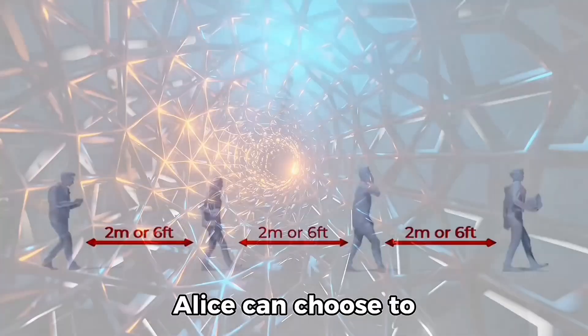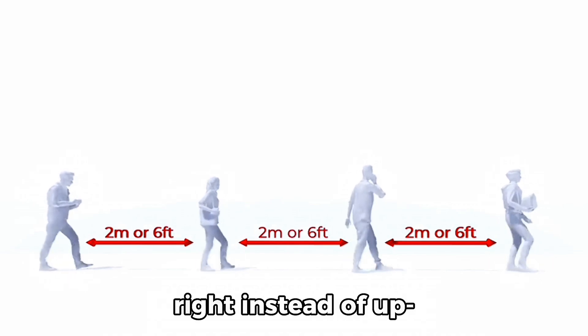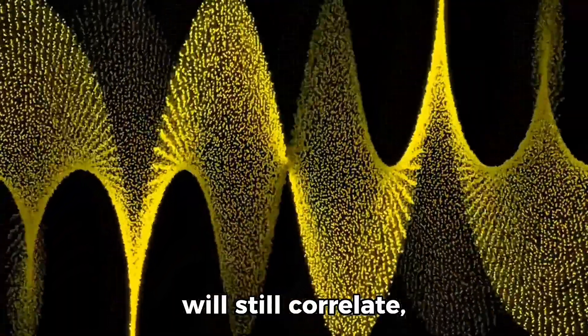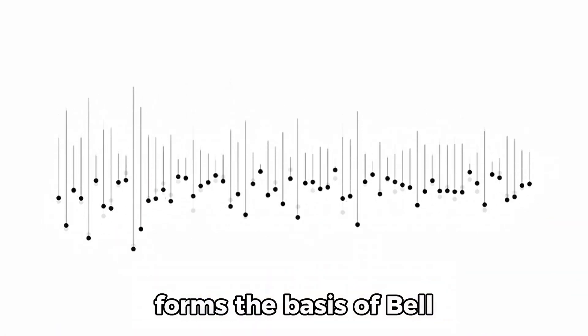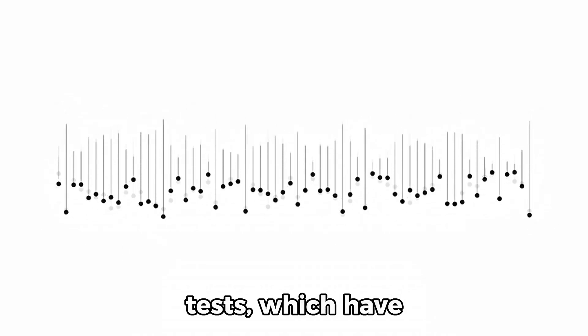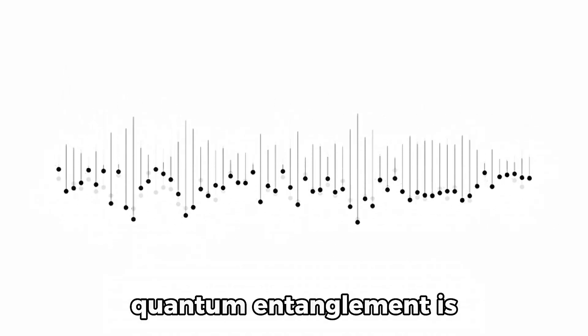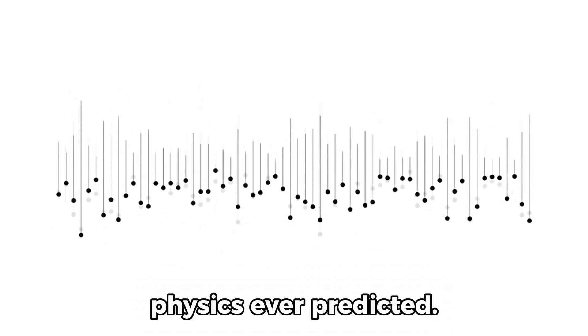spooky action at a distance, as Einstein famously complained. It gets even spookier. Alice can choose to measure her qubit along a different axis, say left-right instead of up-down, and Bob's measurement will still correlate, though in a more complex way. This non-local correlation forms the basis of bell tests, which have repeatedly confirmed that quantum entanglement is real and that reality is stranger than classical physics ever predicted.